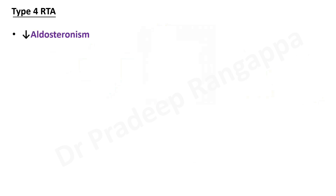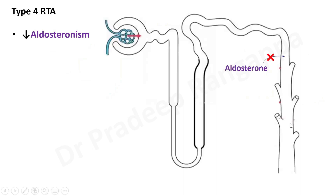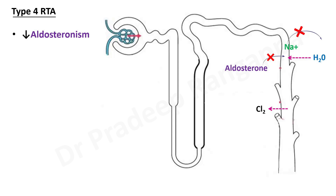Type 4 RTA is mainly hypoaldosteronism — reduced aldosterone is the main pathophysiology. Aldosterone normally acts on the collecting tubules to reabsorb sodium. When aldosterone is deficient, sodium reabsorption fails, so sodium is lost in the tubules. Because sodium is getting excreted, potassium is retained — this is the only RTA type with hyperkalemia, unlike types 1 and 2 which have hypokalemia.